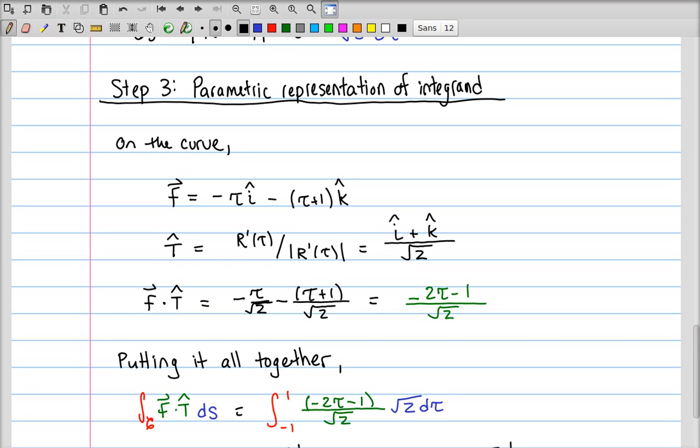The unit tangent is the vector r prime of tau divided by the magnitude of the vector r prime of tau, which is just i plus k, and then we need to normalize that, and we get the square root of 2. Hence, f dot t is going to be the dot product of these two vectors. And when we dot the i components together, we get minus tau over root 2. The k components, we get tau minus tau plus 1 over root 2. And they can be simplified into this scalar function here.